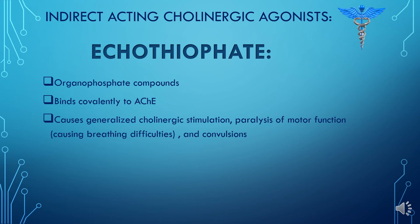If the acetylcholinesterase enzyme function is inhibited, it will increase cholinergic action. In other words, ecothiophate causes generalized cholinergic stimulation, paralysis of motor function, and convulsions — which are sudden, violent, and irregular movements of the body caused by involuntary contraction of muscles.